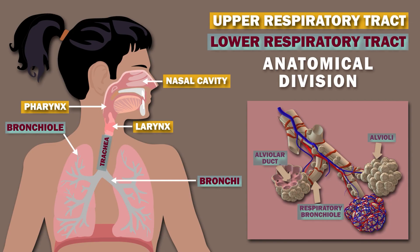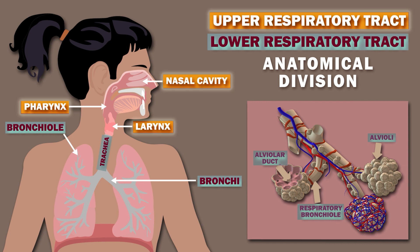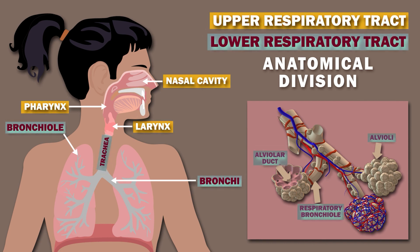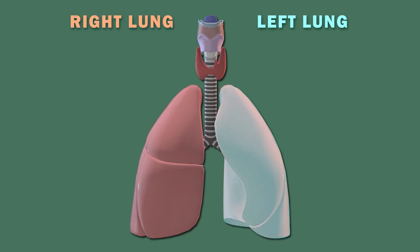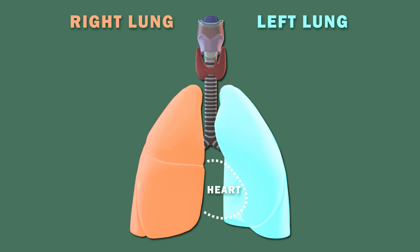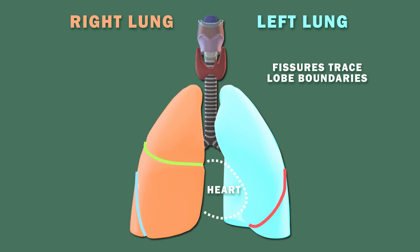The respiratory system can also be divided anatomically into the upper and lower respiratory tracts. The left lung is smaller than the right so the heart is not squeezed, and fissures trace lobe boundaries.